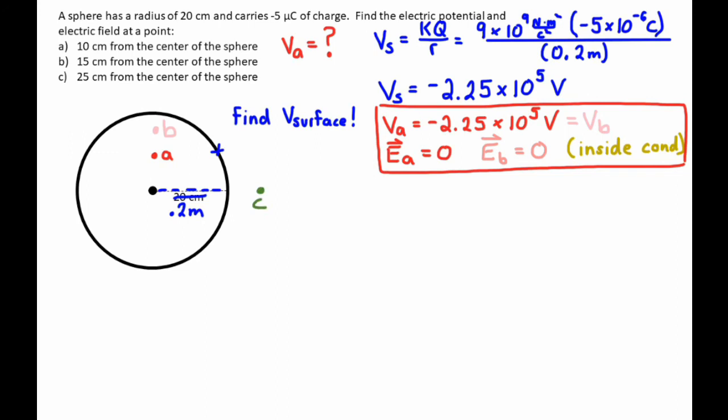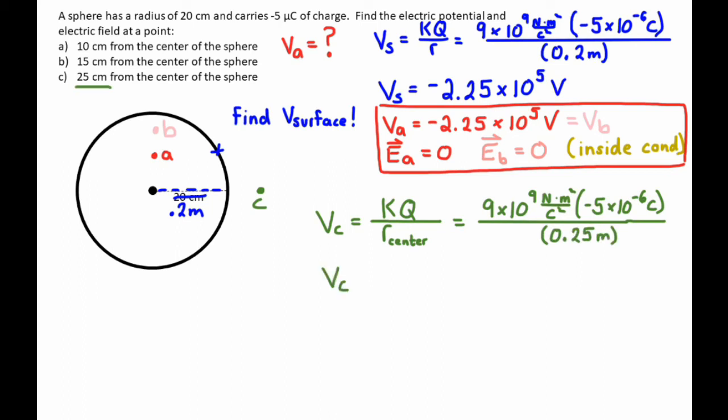All right, so point C is 25 centimeters from the center of the sphere. That's outside the sphere. It's important to recognize that. And so, we're not inside a conductor at point C. So, when I find the electric potential, I'm still going to use the distance from the center. The center of the sphere is going to be my measurement point, but I'm going to use the distance all the way out to point C, kind of like normal. And so, plugging in values, using the distance from the center of the sphere to point C of 0.25 meters, I get a voltage of negative 1.8 times 10 to the fifth volt. So, it's smaller than the voltage inside the sphere. And that voltage would drop as I go infinitely far away to zero, just like always.